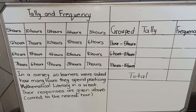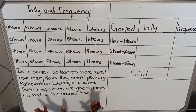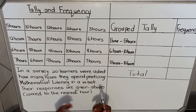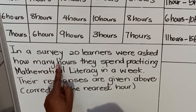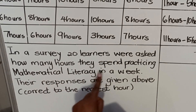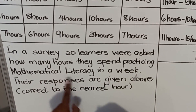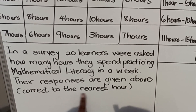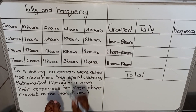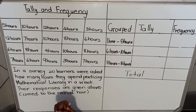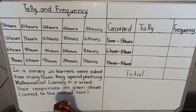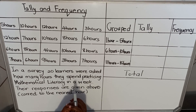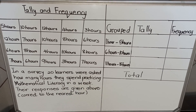Hello everyone, this is a lesson on tallies and frequencies. I'm going to show you how you do tallies and then transform that to frequency. In a survey, 20 learners were asked how many hours they spent practicing mathematical literacy in a week. Their responses are given, correct to the nearest hour — so if a learner said two hours 40 minutes, it would be rounded off to three hours.